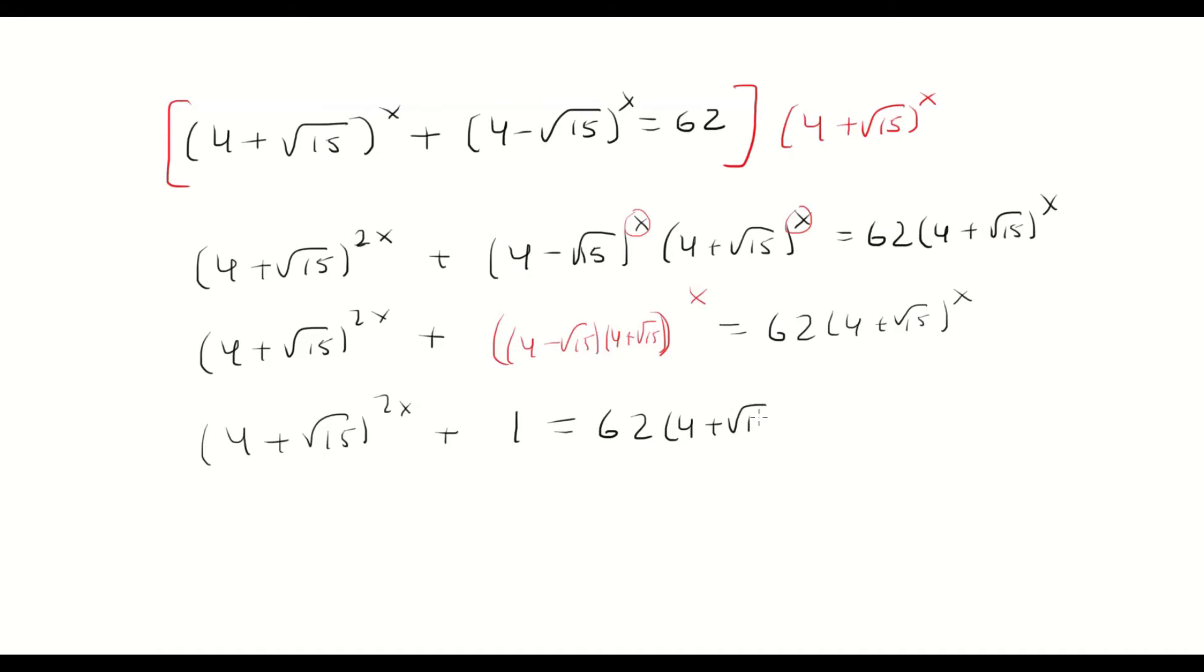And now I'm going to replace u with (4 + √15)^x, and so (4 + √15)^(2x) will be u² and then that's plus 1 equals 62 times u.